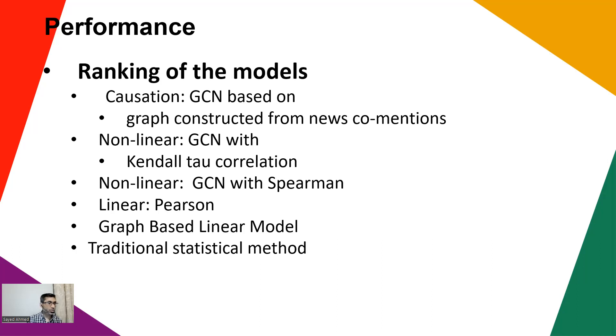Now what is the performance? Before I go to the details of the performance, I want to rank which one performed better. Usually the financial news-based graph performed the best, then usually Kendall tau-based graph convolutional network performed second best, the Spearman-based graph convolutional network third best, and then Pearson, the linear model, and then traditional approaches.